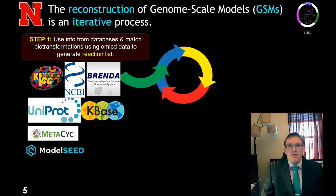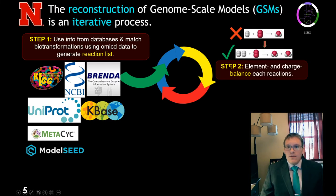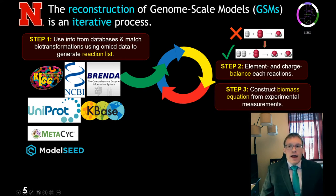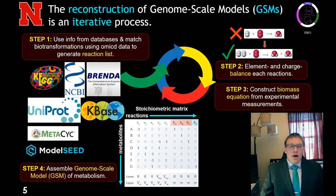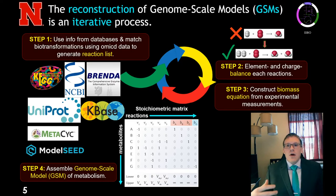To begin, let's discuss DFBA. Genome scale models are reconstructed through an iterative process by which we search publicly available databases to produce a list of reactions which the species might be able to catalyze. We then make sure those reactions are element and charge balanced and create a biomass equation to simulate growth. We then assemble a genome scale model of metabolism, which might look something like this — with reactions, metabolites, and a stoichiometric matrix with limits on reaction rates. We repeat this reconstruction process until our in-silico results agree with in-vivo data.